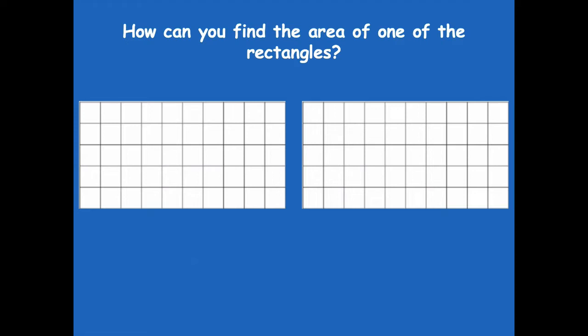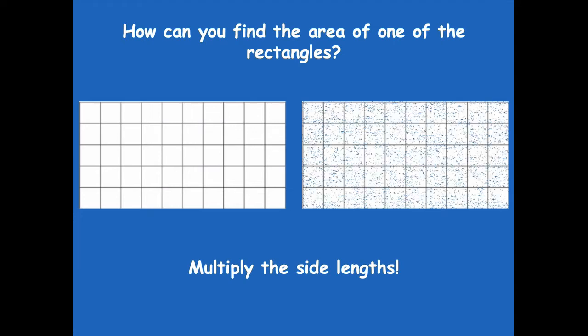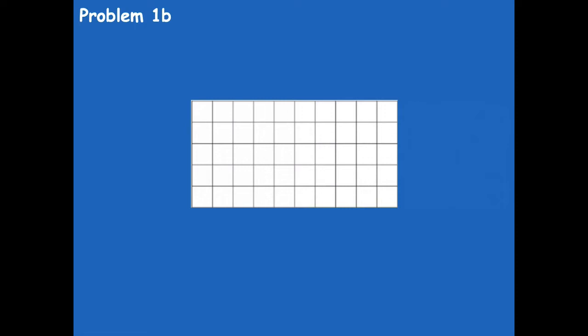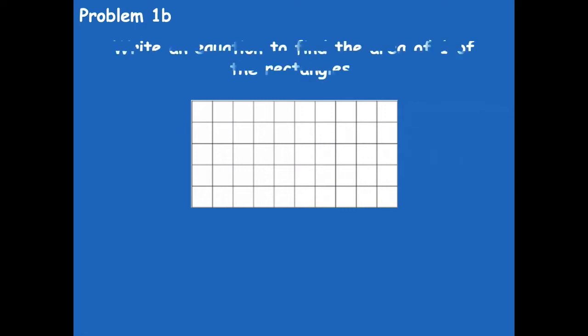How can you find the area of one of the rectangles? We can multiply the side lengths — length times width. Let's look at problem 1B: write an equation to find the area of one of the rectangles. Go ahead and pause the video, write your multiplication equation. Remember, they're both the same so it doesn't matter which one you choose. Pause and then click play when you're ready for the next step.